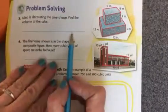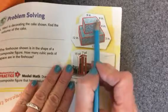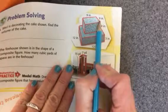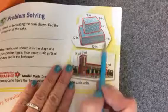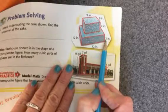Macy is decorating the cake shown. Find the volume of the cake. Well, this is like a two-layer cake, so we need to find the volume of the top box, the top piece, and the volume of the bottom box, the bottom piece, and add them together, just like we did on the front.